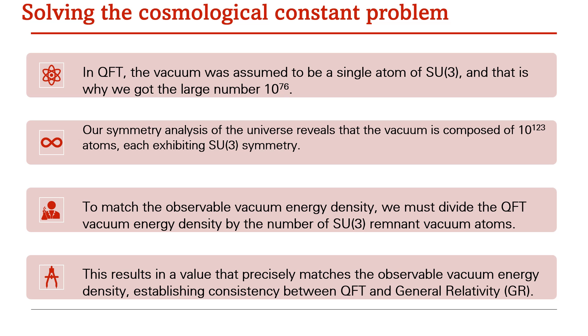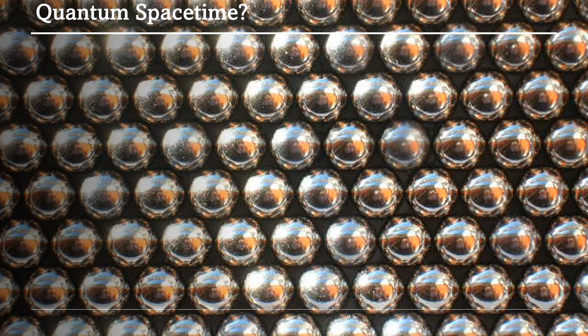Therefore, the cosmological constant problem is solved based on this simple symmetry analysis of the universe through time. Our results reveal that the vacuum energy density is composed of 10¹²³ atoms of SU(3), implying that spacetime could be fundamentally discrete — possibly Lorentzian but also discrete. I believe this may open a lot of investigation into understanding the nature of quantum spacetime based on SU(3) symmetry.